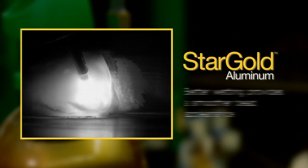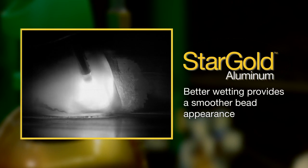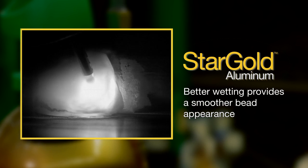Using Stargold Aluminum Shielding for MIG welding, this video shows a more consistent, stable arc producing better wetting characteristics and a smoother bead appearance.